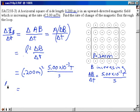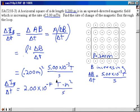So the rate of change of the flux is 2.00 times 10 to the minus 4 tesla meter squared per second, where a tesla meter squared is a Weber.